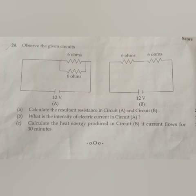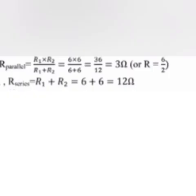Question 24: Observe the given circuits. (a) Calculate the resultant resistance in circuit A and circuit B. Answer: Resultant resistance in figure A, R_parallel = (r1 × r2)/(r1 + r2) = (6 × 6)/(6 + 6) = 36/12 = 3 ohm.